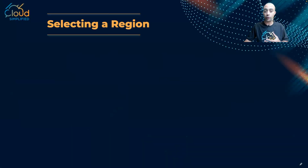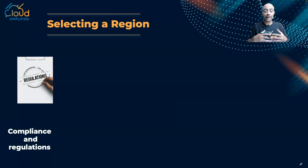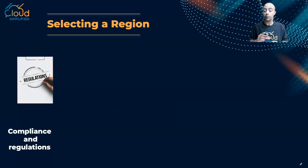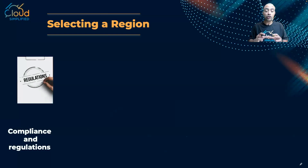The first criterion is what we call compliance and data regulations. A region is by definition inside one country, which is very important for data residency. Some organizations, especially public sector and government organizations, have a mandate that their data must remain inside the country — so you must choose a region within that country.